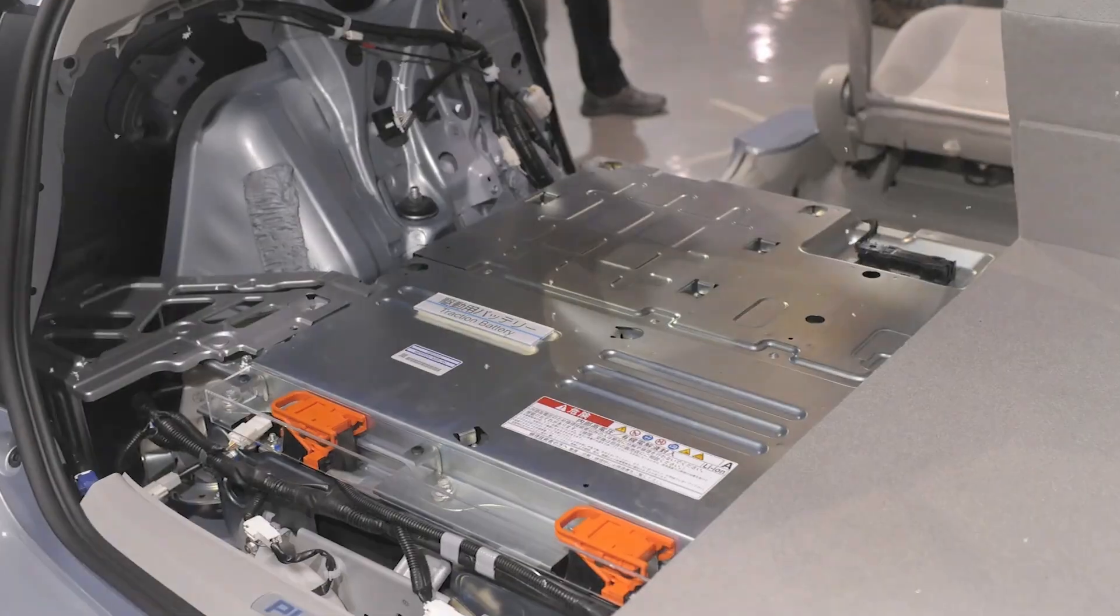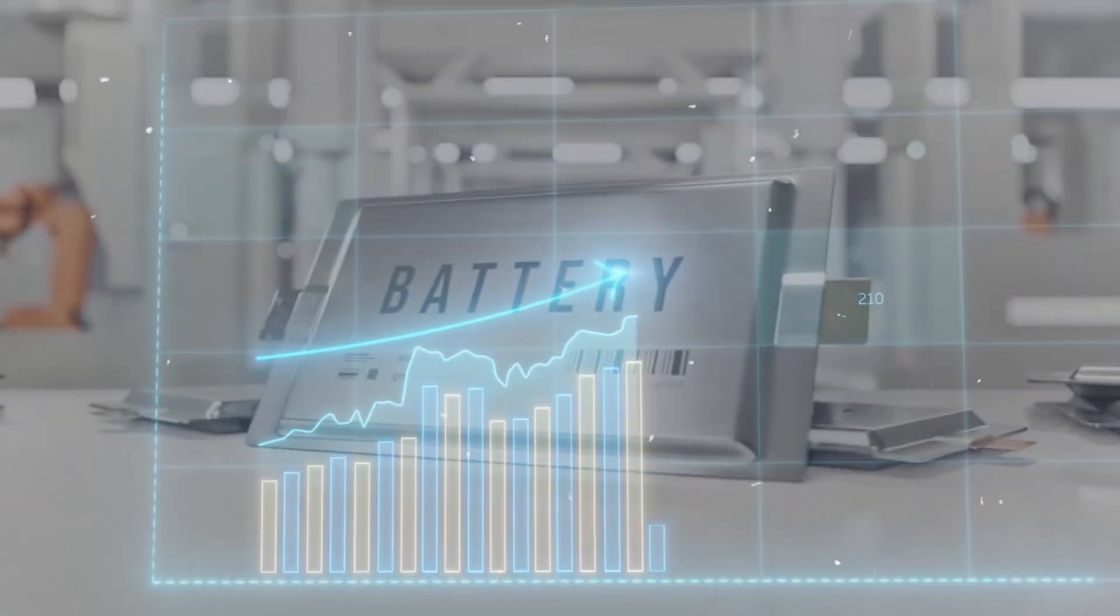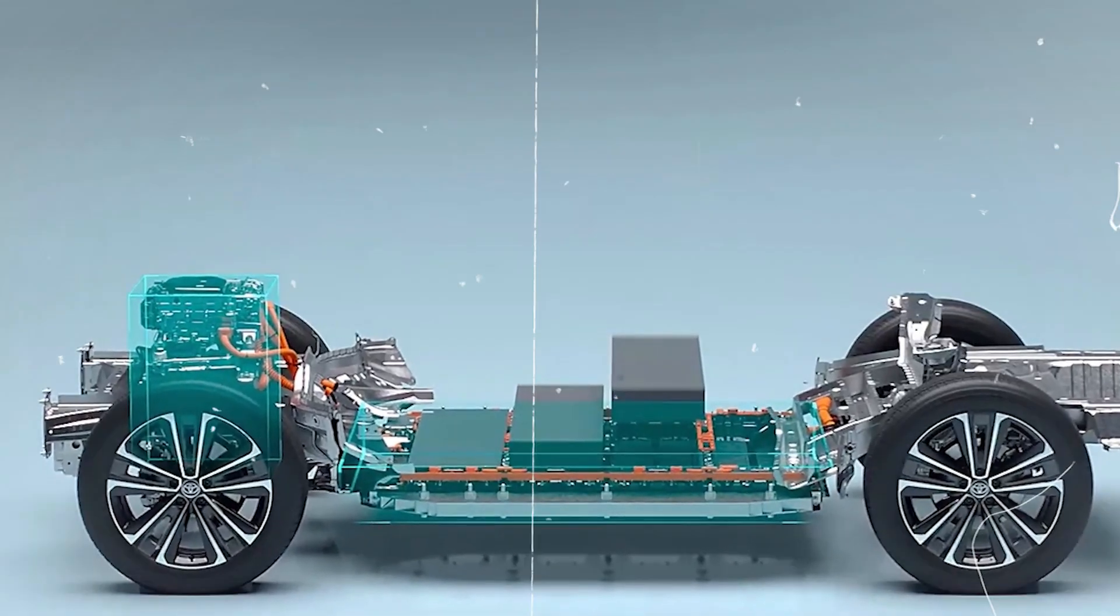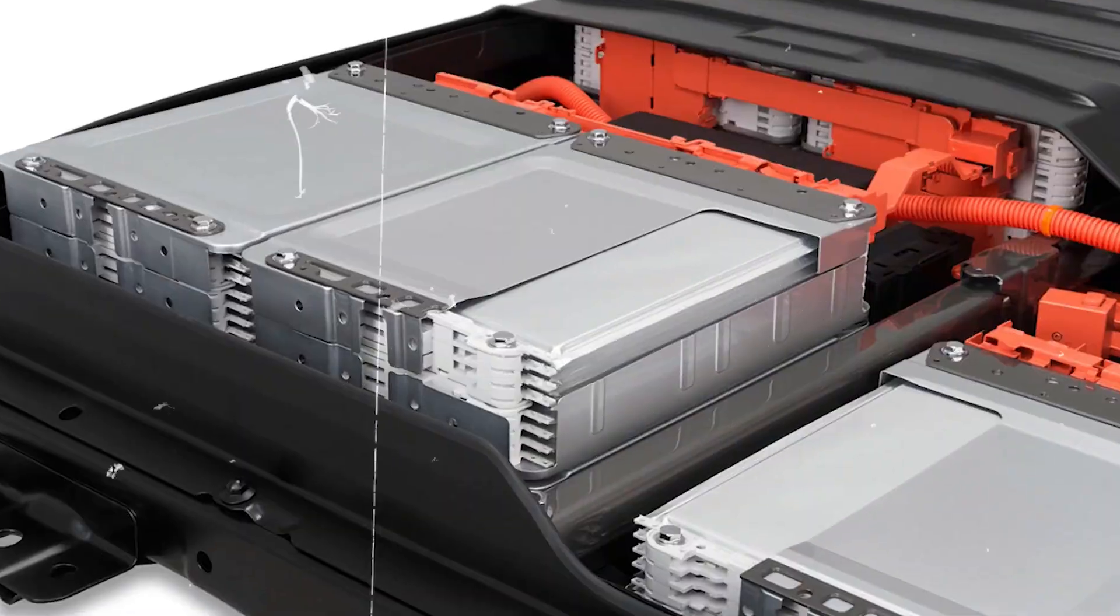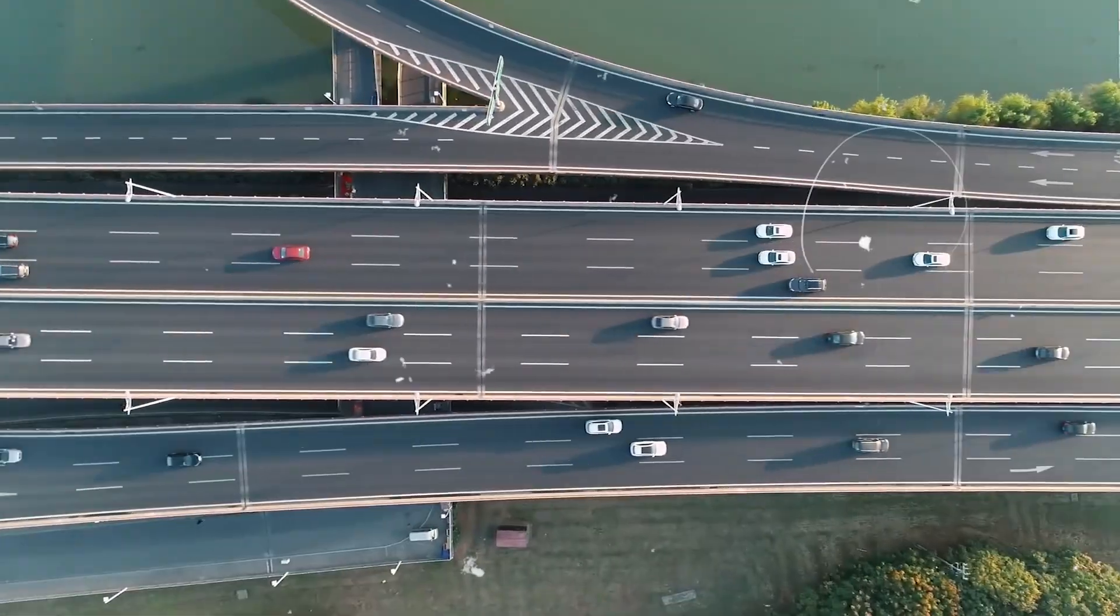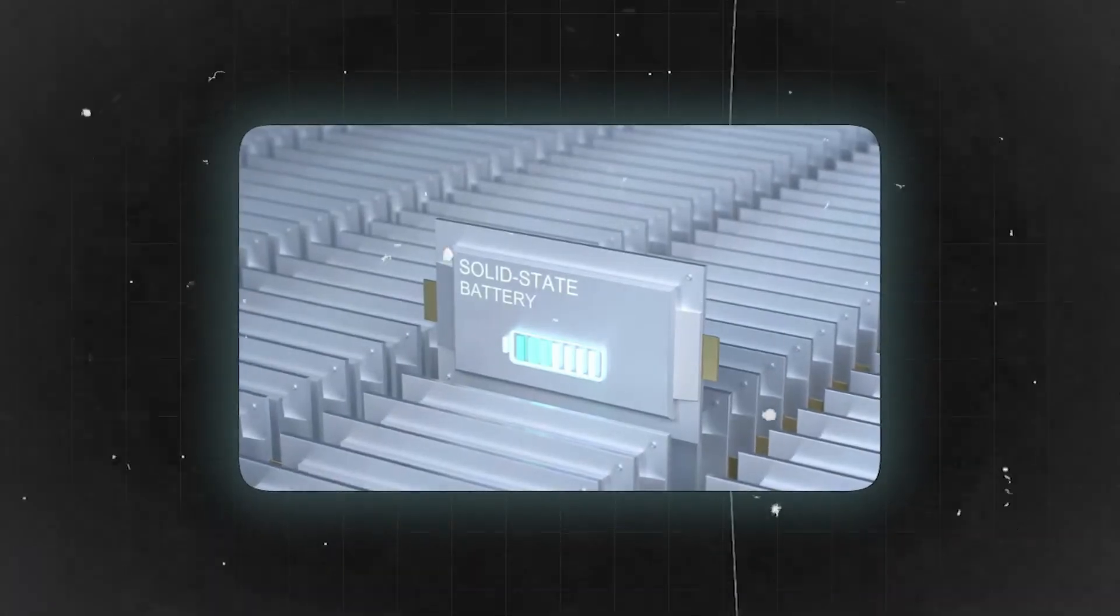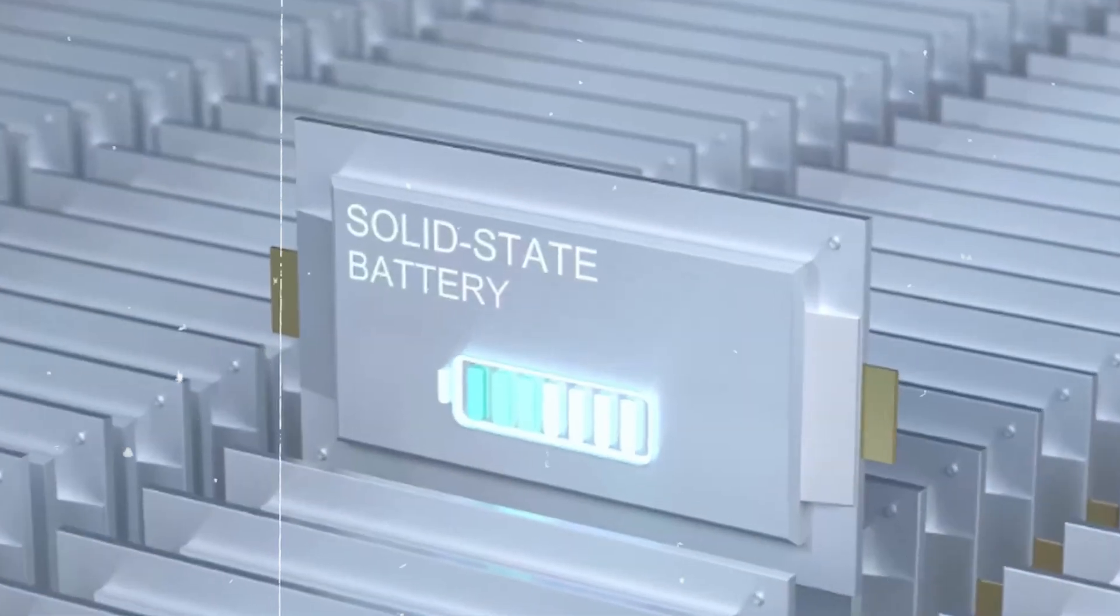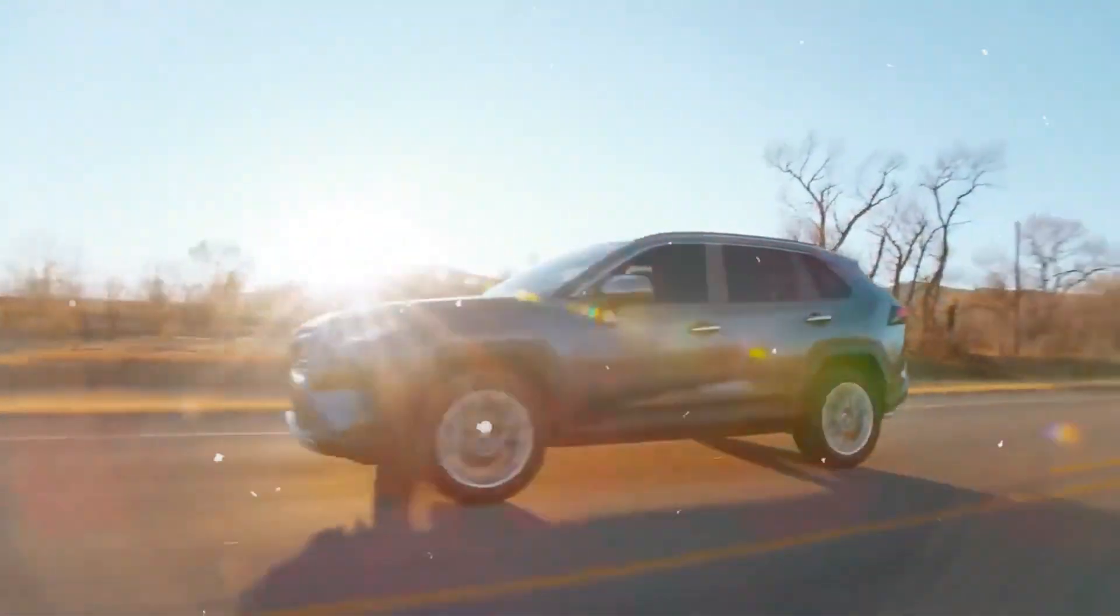This is because solid state EV batteries have higher energy density compared to other batteries, meaning EVs with such batteries can travel longer distances on just one charge. Toyota says they will produce EVs with a solid state battery that will be able to do 750 miles without charging. This indicates that you have unlimited miles of travel without concern of showing an empty power bar on your dashboard.